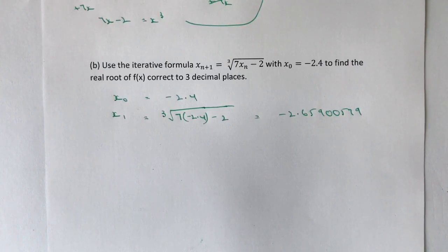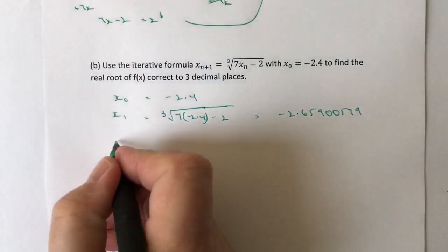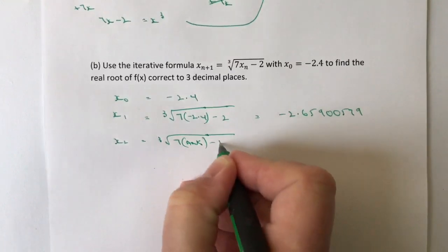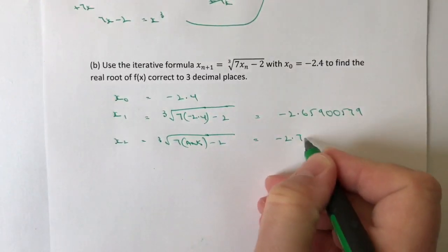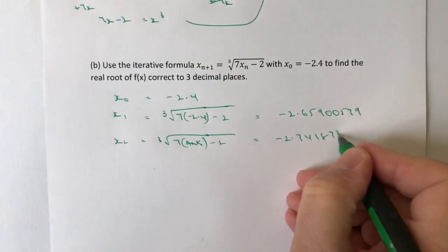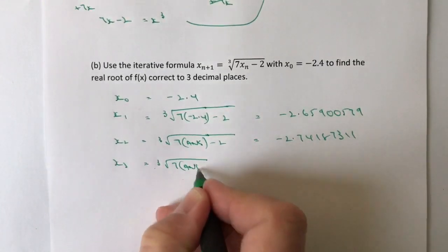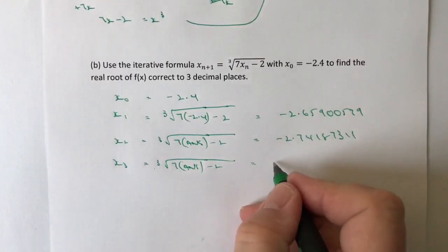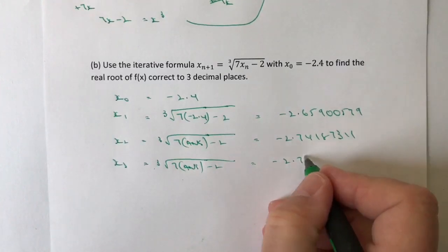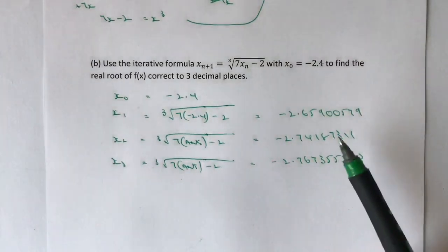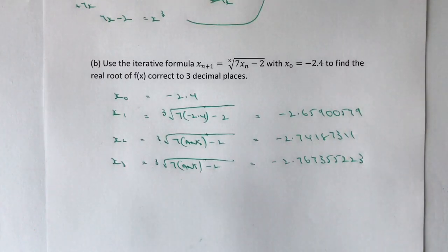What we've got to do now is just keep feeding the same formula to get progressively better values of x. We're taking this result and feeding it into x₂ — again, the cube root of 7 times answer minus 2. The easiest thing is to use the answer key on your calculator. For x₂ that gives minus 2.74187311. I suggest you just keep writing them down, because what we're looking for is to get to the point where we're correct to three decimal places. It's an incredibly tedious question, but students who write out five or six values will be absolutely fine.